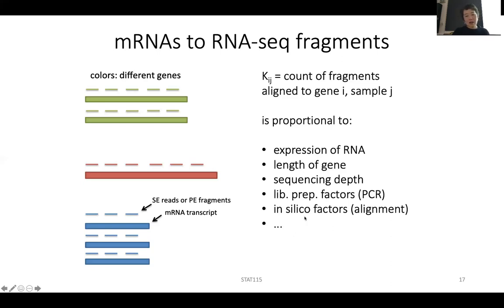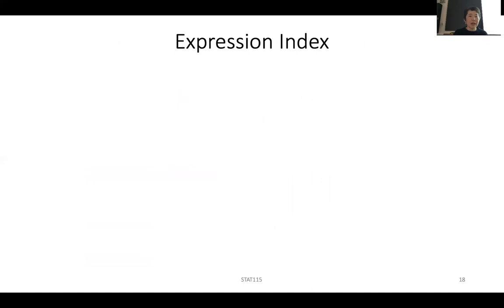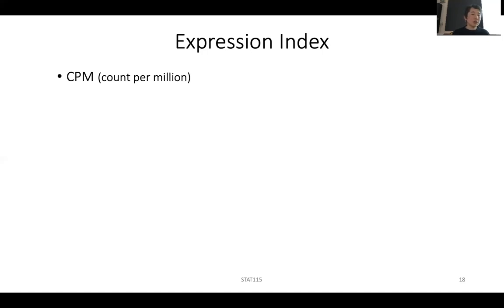There might also be in silico factors, such as whether you use HiSAT or STAR and how you deal with reads that are not uniquely mapped to the genome. Over the years, people have tried different levels of normalization in order to reach a good expression index. The simplest thing is to normalize by sequencing depth.